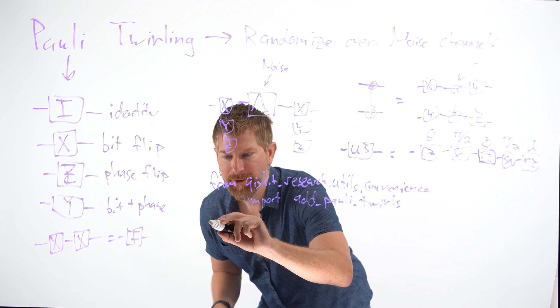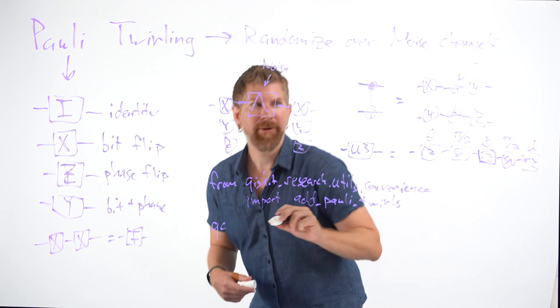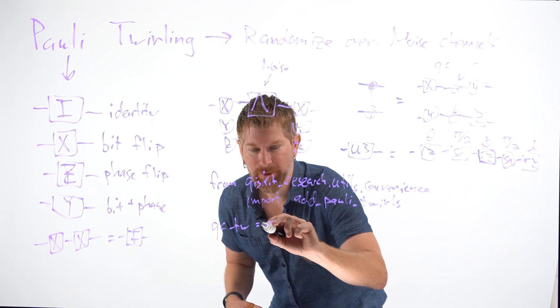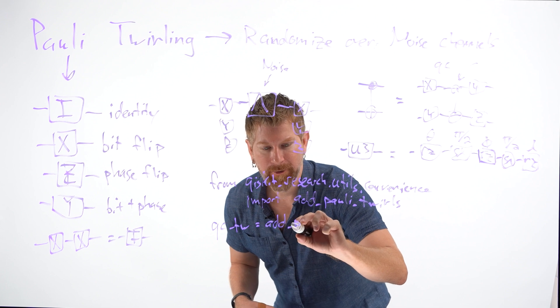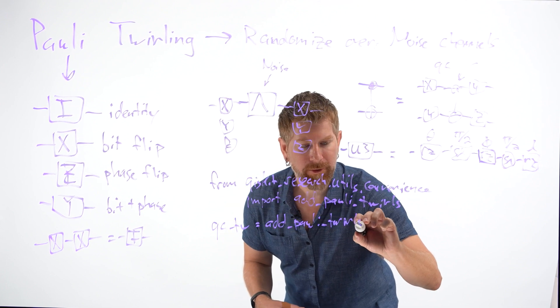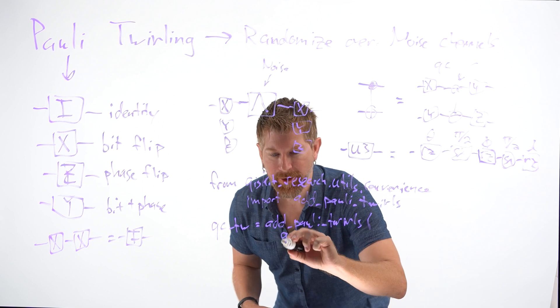Then we can twirl our circuits, and we'll call this, say our circuits qc. qc_twirled is equal to add_pauli_twirls. And then we'll put the circuits in there.